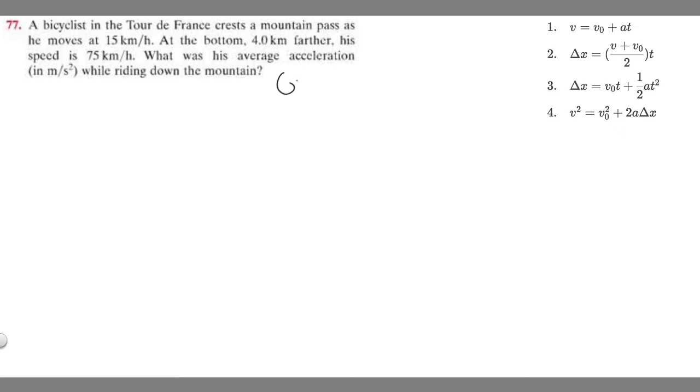So let's see what we're given first. We're told that a bicyclist is traveling down this mountain pass and he moves at 15 kilometers per hour. This is going to be our initial velocity, which we represent by v sub zero. So v₀ equals 15 kilometers per hour.